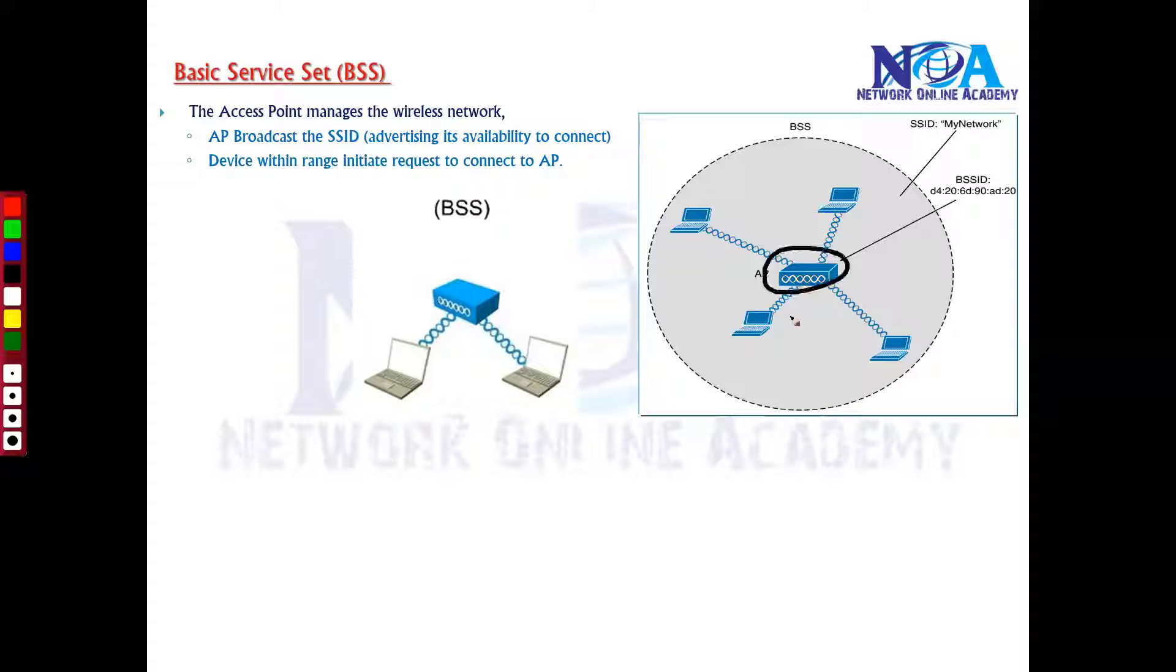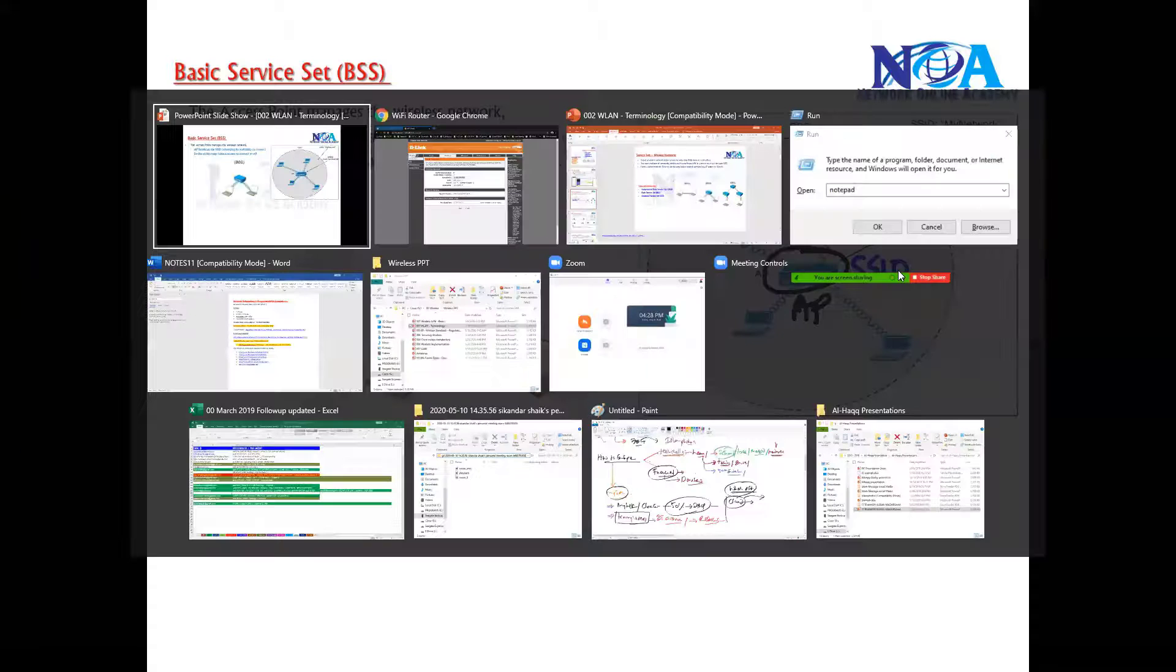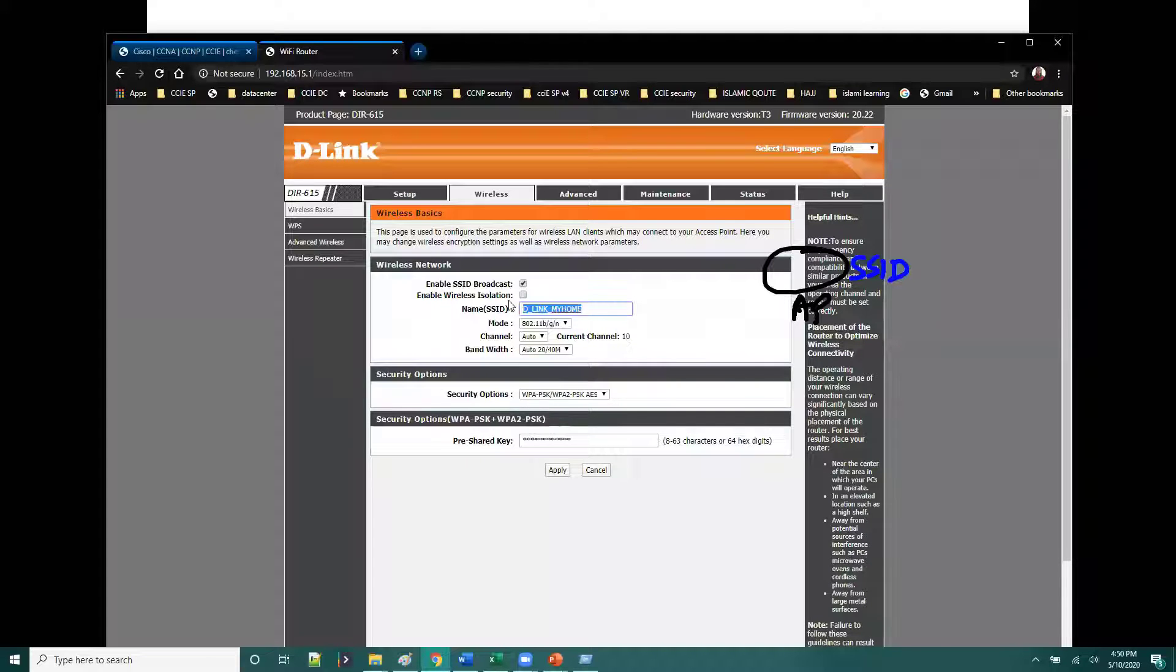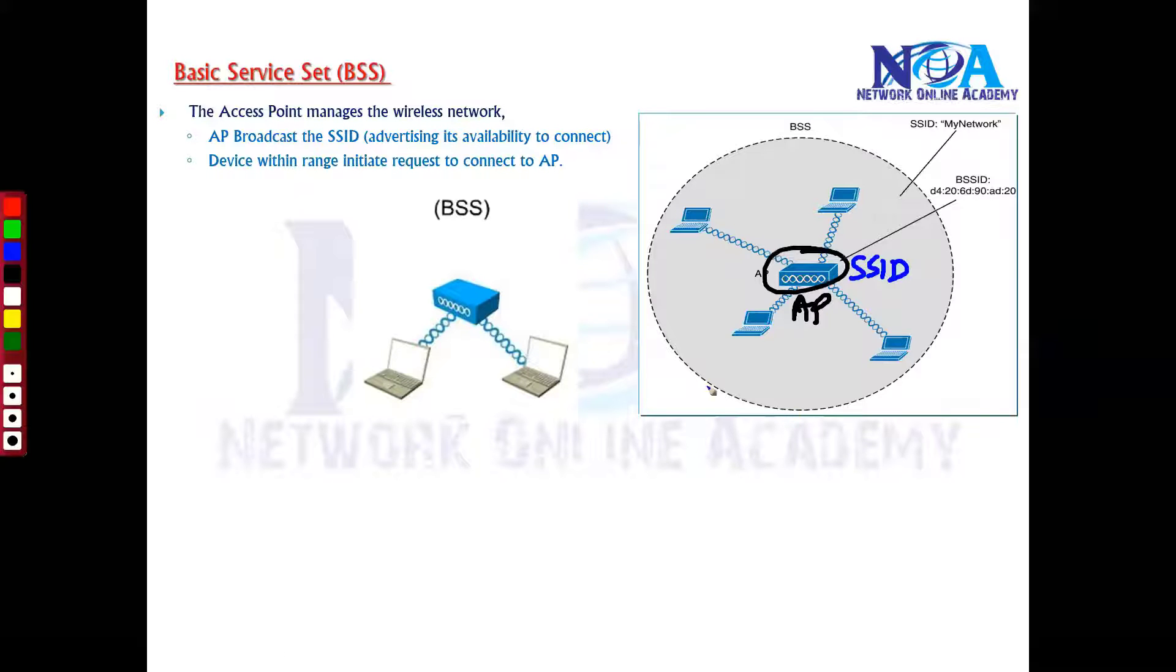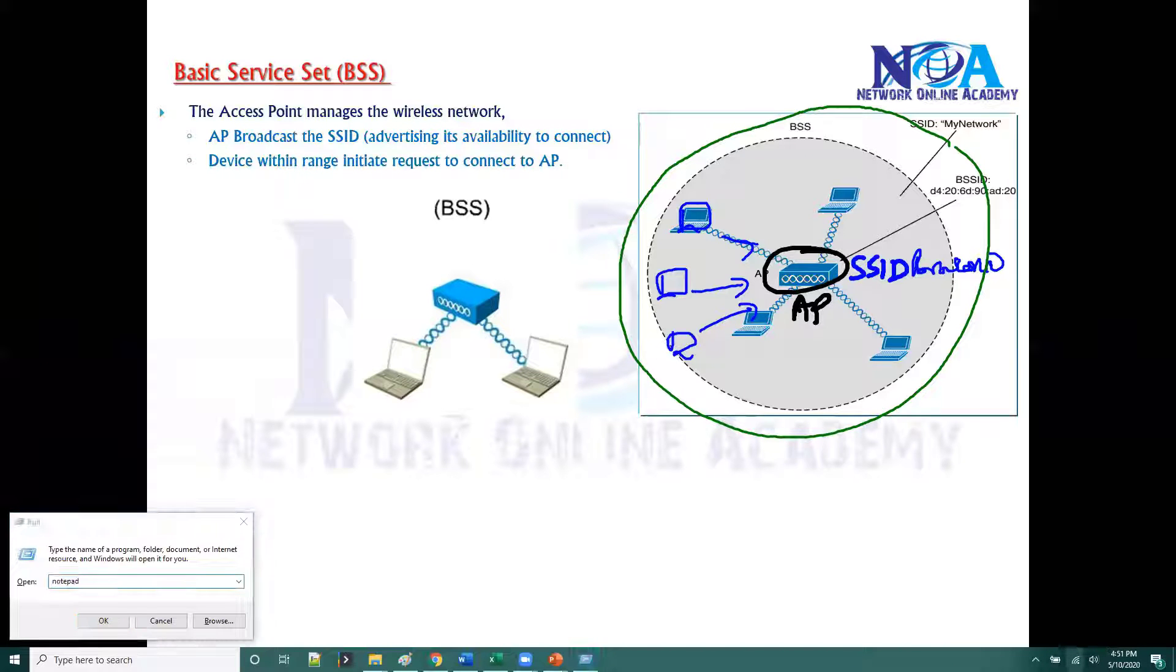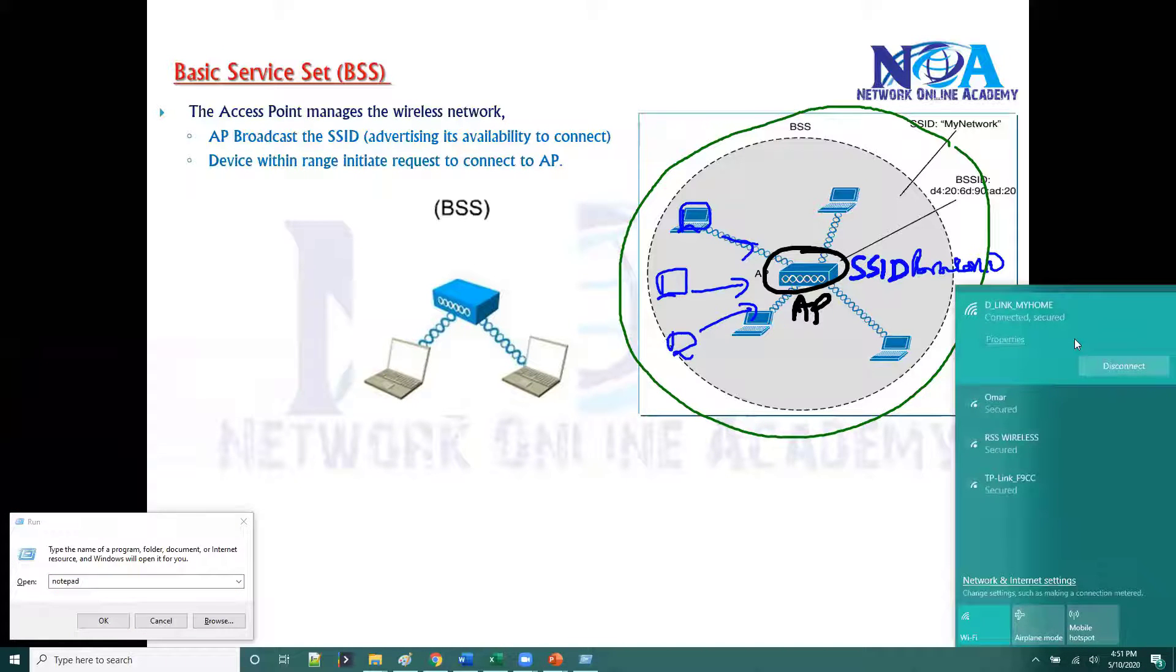This access point is configured with some kind of SSID, and this SSID is broadcast within that particular coverage area. Any device which is within that coverage area can listen to those broadcast SSID messages. If you take an example, in my laptop you can see this is the Wi-Fi or the SSID to which I am connected.